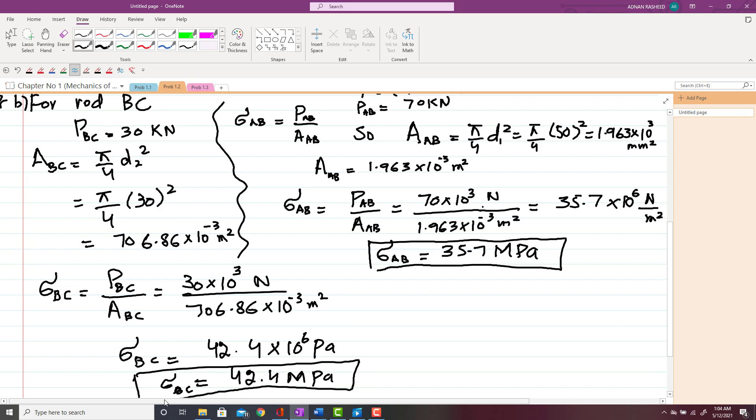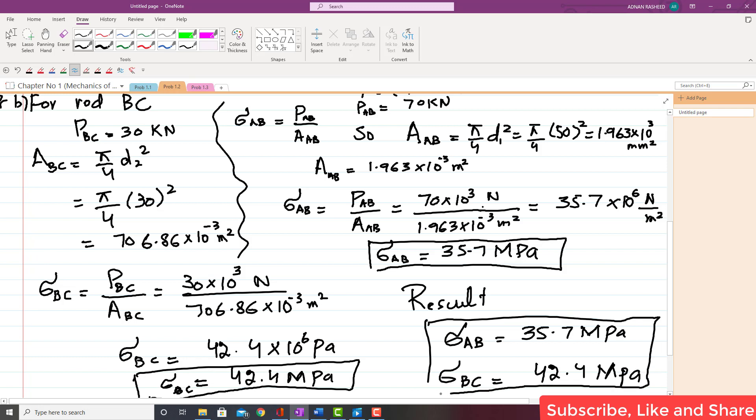So we found both the stresses. The result is: average stress in rod AB is 35.7 MPa, and stress in mid-section of BC is 42.4 MPa. So we have found the solution of this problem. If you have any questions, you can ask in the comment section. Thank you.